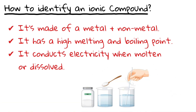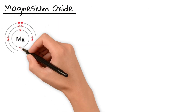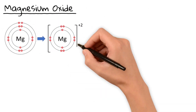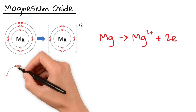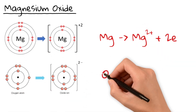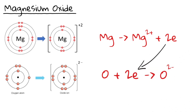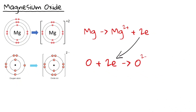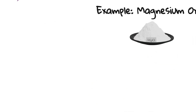But what about magnesium oxide? Magnesium is a metal with two electrons in its outer shell. It loses both electrons to form Mg²⁺. Oxygen is a nonmetal with six electrons in its outer shell. It gains those two electrons to form O²⁻. The Mg²⁺ and O²⁻ ions attract, forming an ionic bond.